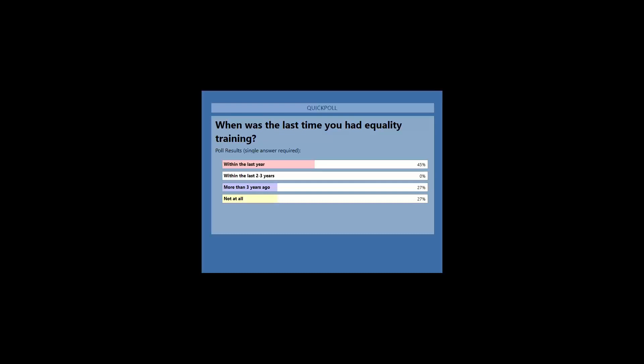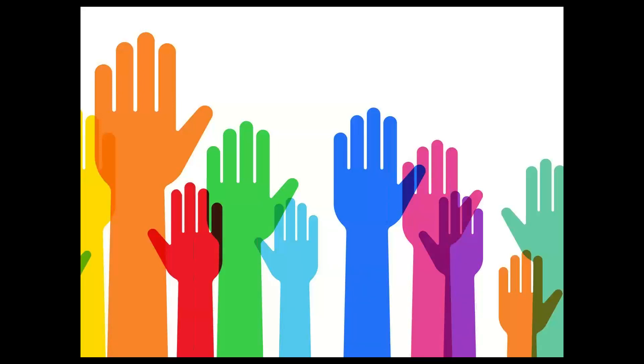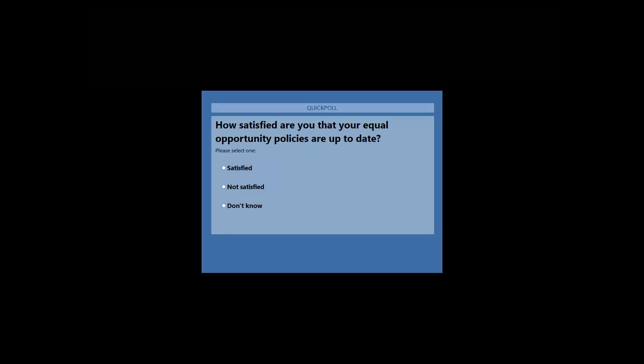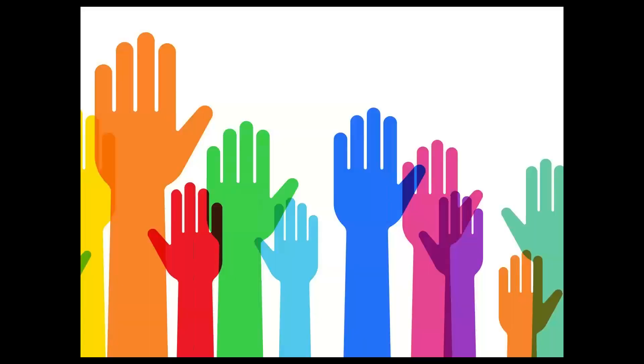The second poll asks: how satisfied are you that your equal opportunities policies are up to date — satisfied, not satisfied, or don't know? The results show 73% satisfied, 18% not satisfied, and 9% don't know. Really good to see that the majority are satisfied with the policies they have in place — policies are often the starting point, but translating that into something engaging and understandable for employees is absolutely key.